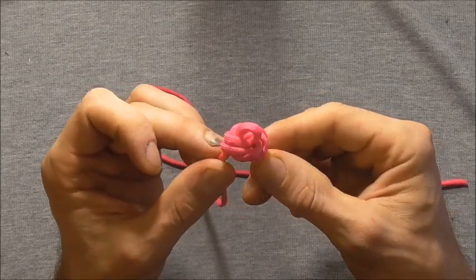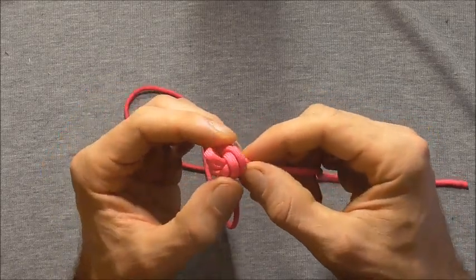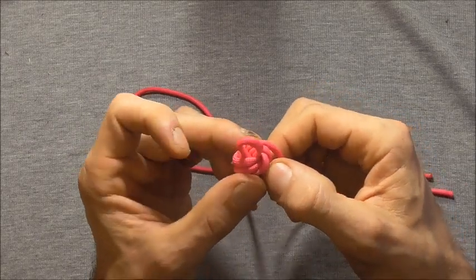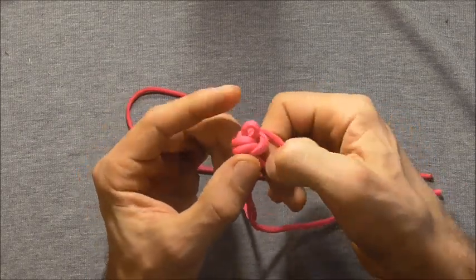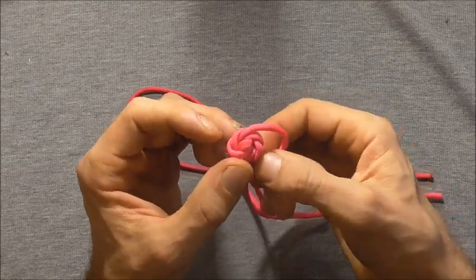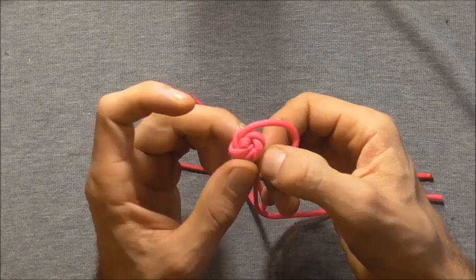And you can see we're starting to take shape here. And this second time when we get to the loop we can pretty much close that all the way down. Again careful not to lose it right in the centre of the knot.